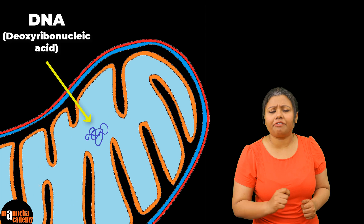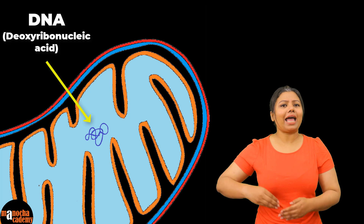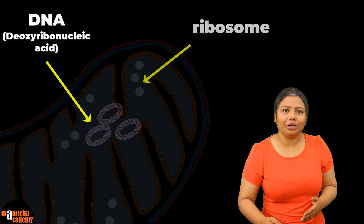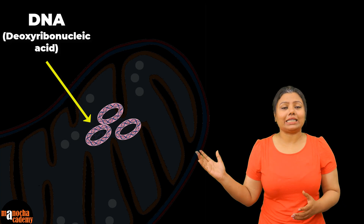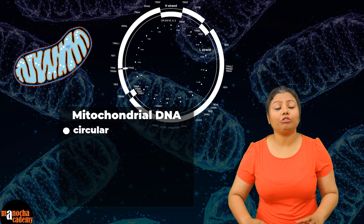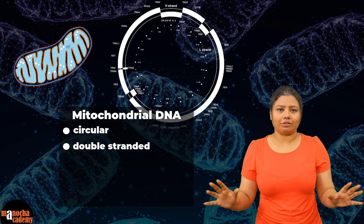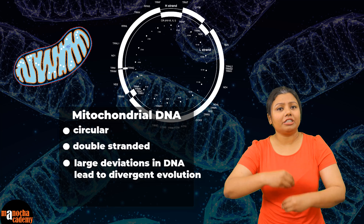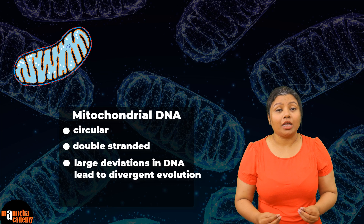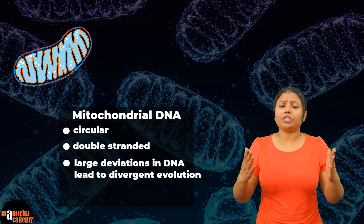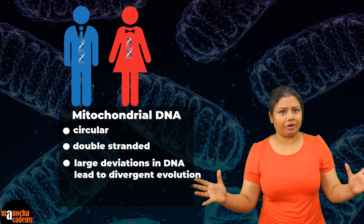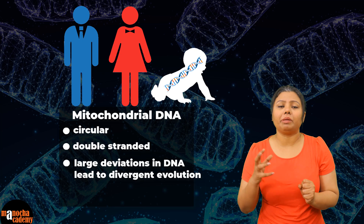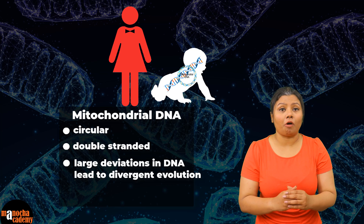Inside the matrix we also find a proper circular double-stranded DNA. Mitochondria is one of the very few cell organelles which possess its own DNA and its own ribosome. The DNA is circular and double-stranded. The mitochondrial DNA has been found to show a large variety of deviation, and a large amount of divergent evolution has been showed by the differences we see in the mitochondrial DNA. Just like we inherit our nuclear DNA from both parents, the entire mitochondrial DNA comes from our mother.